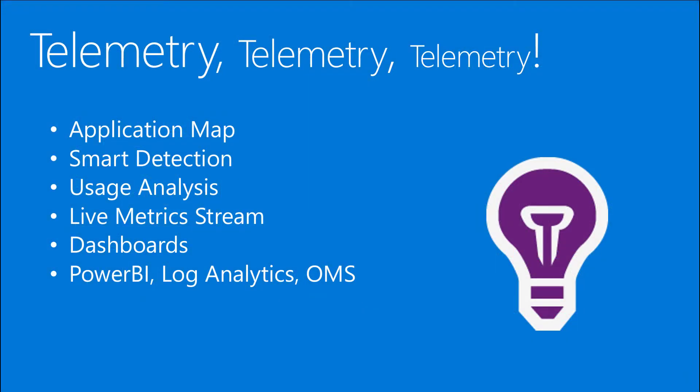App Insights provides a handful of tools to understand our application. The application map is probably the most popular — similar to service map as seen in System Center Operations Manager and OMS. The application map visually maps our application and all of its dependencies and components. So we can see if a component is in a warning state or if there's an issue with one of the dependencies and make that adjustment.